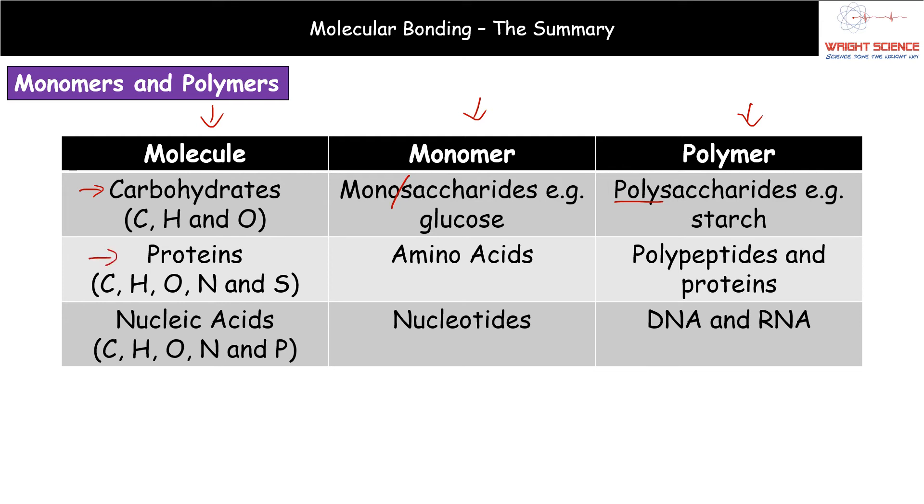Our second molecule, proteins. Now, proteins are made of carbon, hydrogen and oxygen. But they have two additional elements that can be present. Nitrogen, first of all. And that's going to be in all of those amino acids. And then sulfur in some amino acids. So, all proteins are going to have carbon, hydrogen, oxygen and nitrogen. Some will have sulfur. But not all. The monomers of our proteins are the amino acids. Hopefully, you remember that from GCSE. And then when we join those amino acids together, we will make polypeptides. So, many peptides. And we can make our proteins.